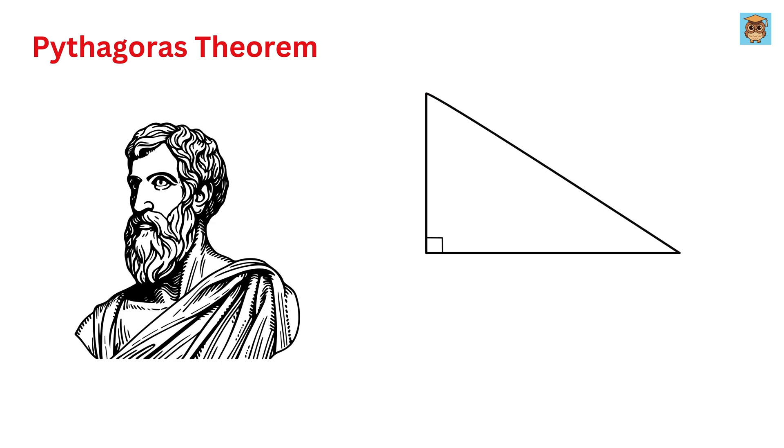This theorem tells you that if you take the side opposite the right angle and call it C, and the other two sides A and B, then the square of C equals the sum of the squares of A and B.